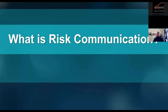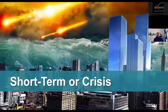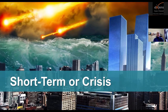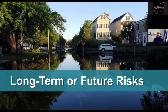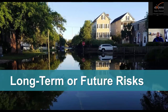I want to briefly talk about what risk communication is. There are two key types. The first is short-term or crisis communication, where the emergency is about to hit and we're trying to get people to take immediate actions right now. That's not what I'm going to focus on today. I'm really focusing on long-term or future risk, where the emergency is not there, the risk does not feel immediate or necessarily personal. The challenge is that because it's not immediate, we don't necessarily prioritize it in our minds.